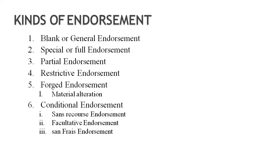There are different kinds of endorsement: blank or general endorsement; special or full endorsement; partial endorsement; restrictive endorsement; forged endorsement — in forged endorsement there is material alteration; and conditional endorsement, which is also called qualified endorsement. Under conditional or qualified endorsement, there are three further kinds: sans recourse endorsement, facultative endorsement, and sans prize endorsement.